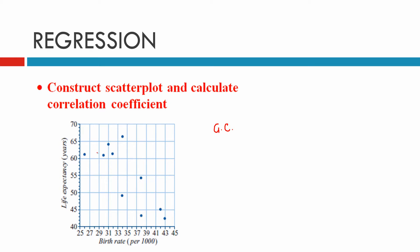You can see there's a type of line there that seems to be a negative line. Just remember that life expectancy is on the y-axis and birth rate is on the x-axis.